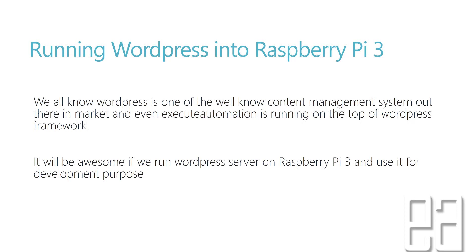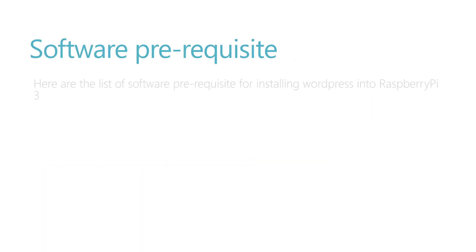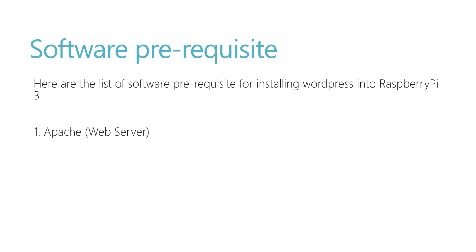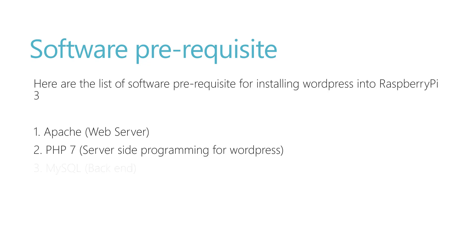We are limited to making the Raspberry Pi 3 a WordPress web server. The prerequisites required are: first, an Apache web server, which is responsible for running WordPress; then PHP 7, the server-side language WordPress is built on; and MySQL, the back end of WordPress where all posts, images, and changes are stored in the database.